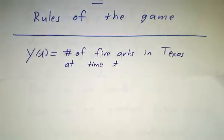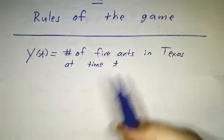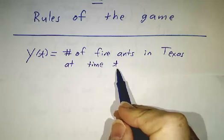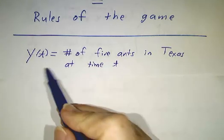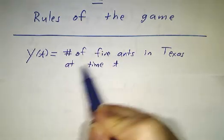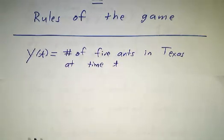For example, let's suppose we were studying the number of fire ants in Texas at a certain time t. Now, you could plot the data and try to fit a function to that, but that doesn't tell you anything about why the fire ants are increasing or decreasing or what will happen in the future.